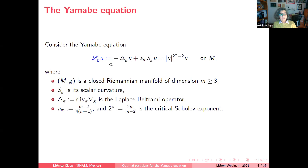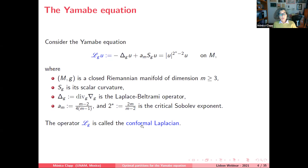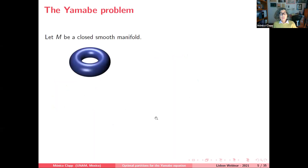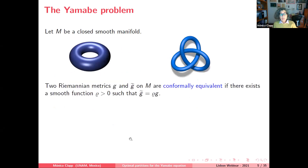The operator on the left-hand side, L_G u, is called the conformal Laplacian. This equation has the property of being conformally invariant: if you change the metric by a conformal metric, the equation does not change, and there is a one-to-one correspondence between solutions. If you have a closed smooth manifold and take two Riemannian metrics, they are said to be conformally equivalent if you can find a positive smooth function rho such that G-tilde equals rho times G.